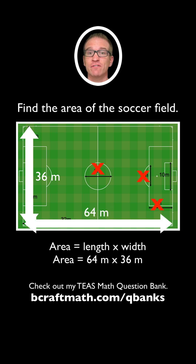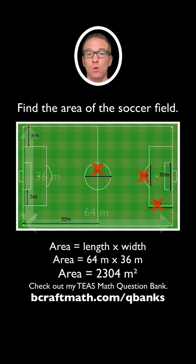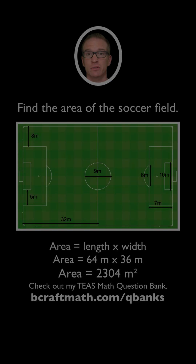But back to our question: find the area of this soccer field. We take the length of 64 meters times the width of 36 meters, and we get an area of 2,304 square meters.